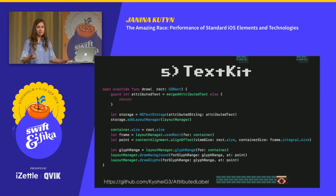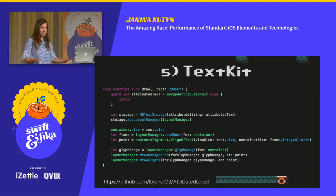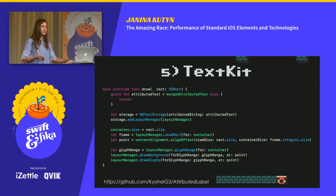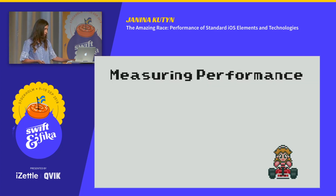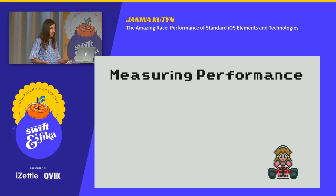Back to the Text Kit example — I found a class on GitHub that claims to be faster than UILabel. It overrides the draw method like the Core Text approach did, and it uses the layout manager to actually draw the glyphs. So those were the approaches. Now let's look at the actual numbers.